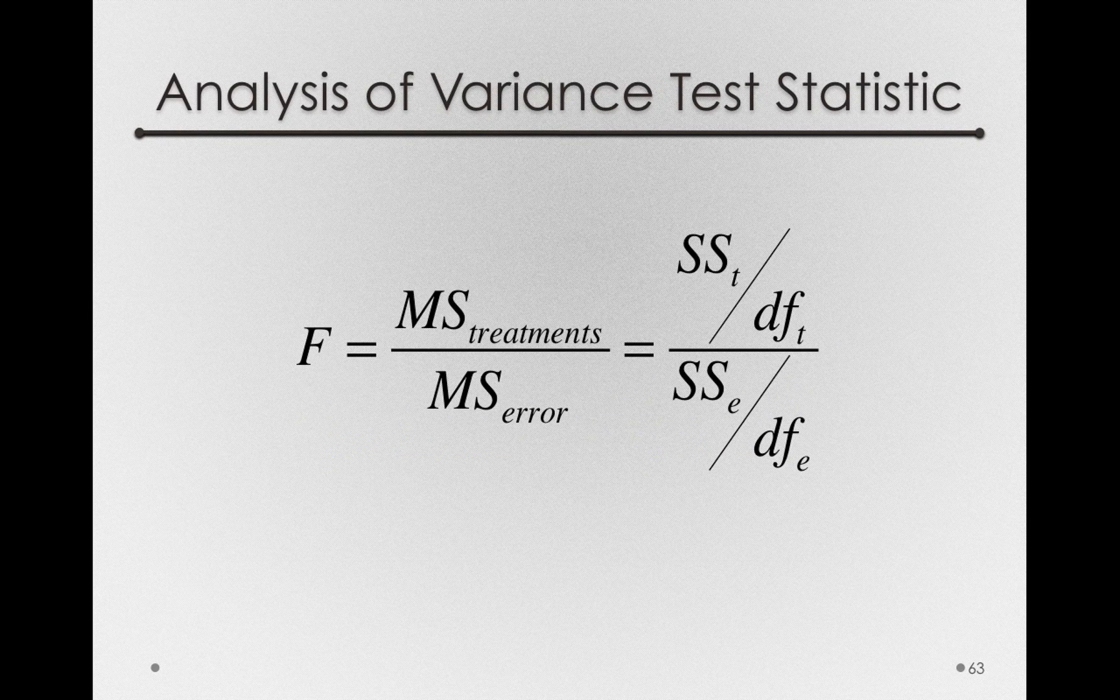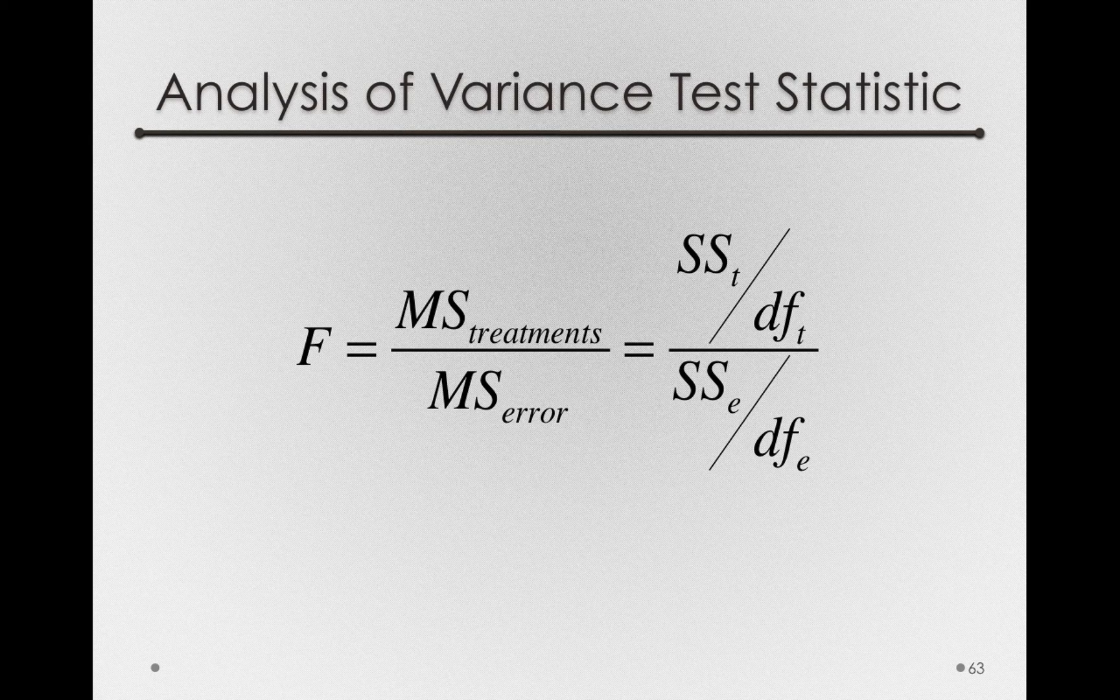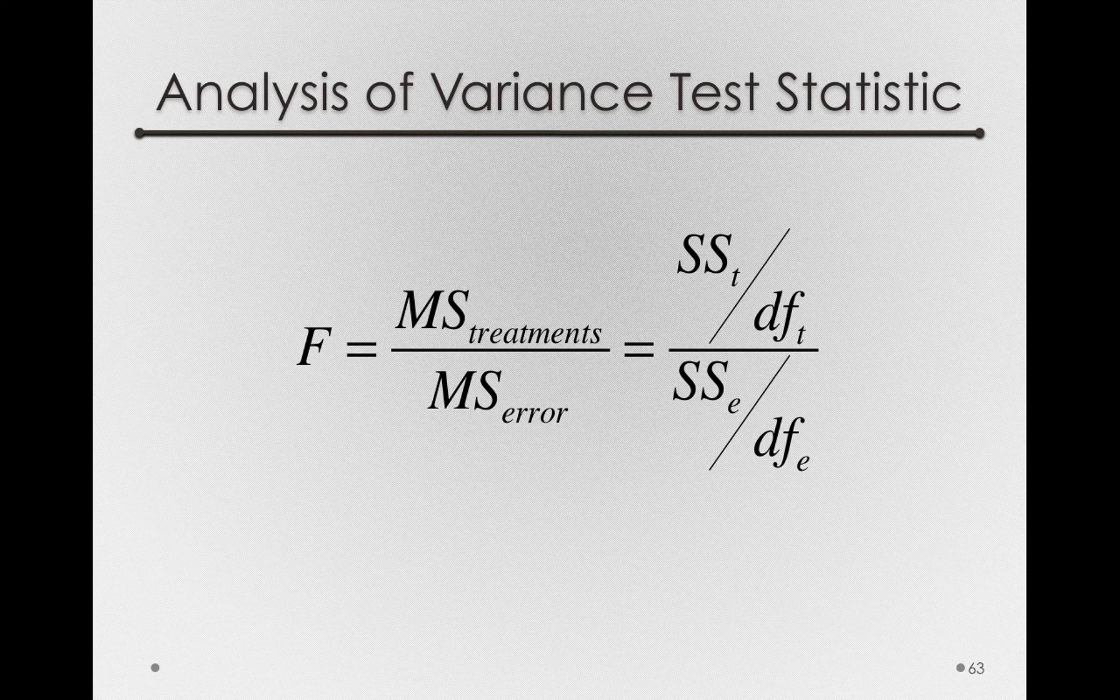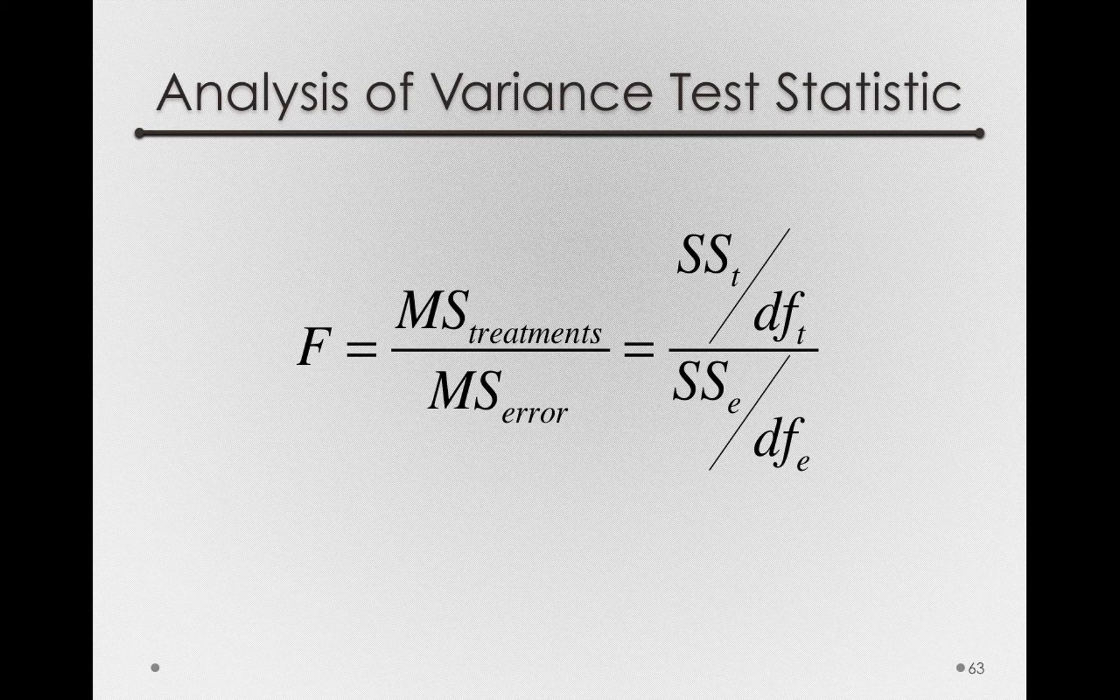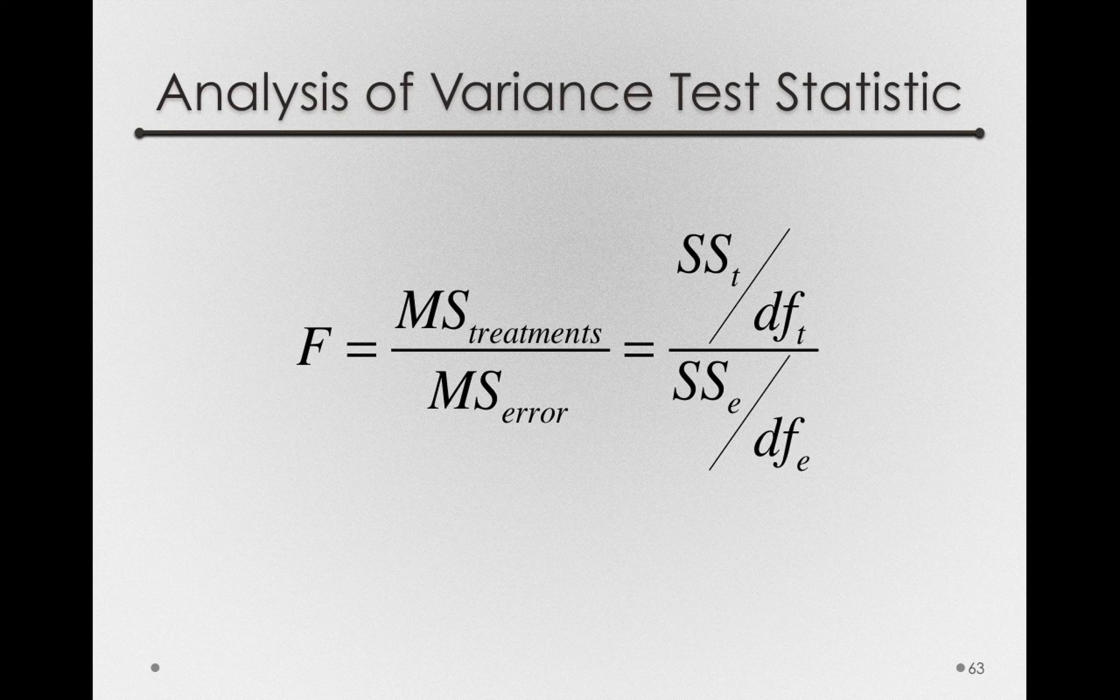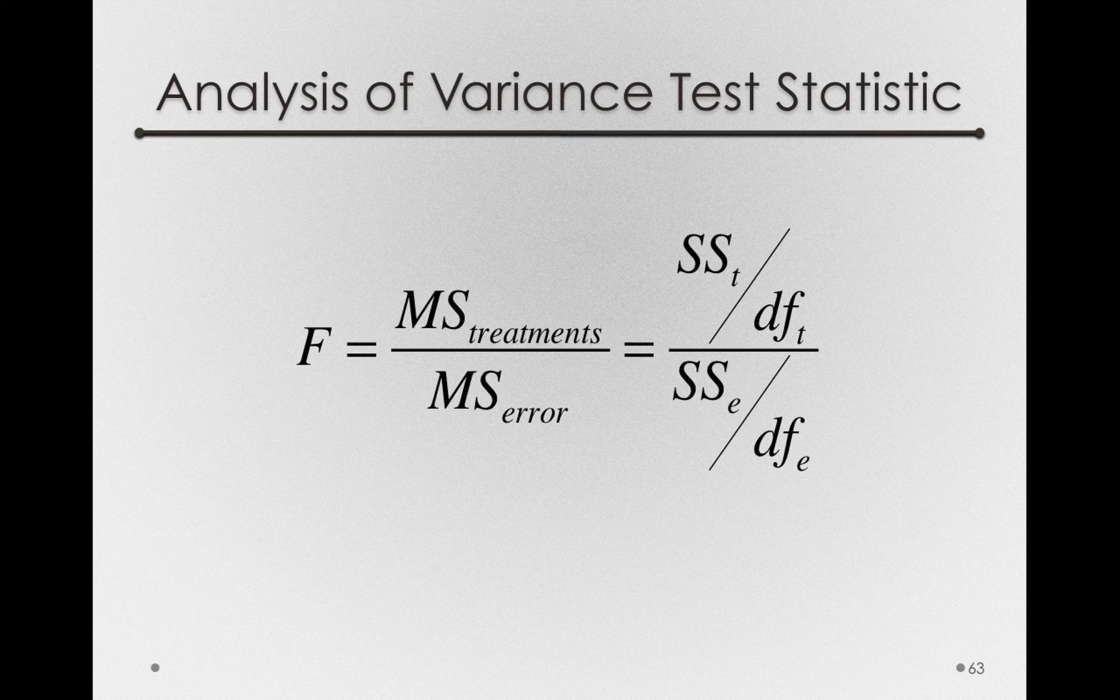Now let's remember why we were doing this. We're forming an F statistic that allows us to find the mean square for treatments divided by the mean square for error. Those mean squares, if the null hypothesis is true, should be estimating the same variance. That is, if the null hypothesis is true, they're really both estimates of the same error.